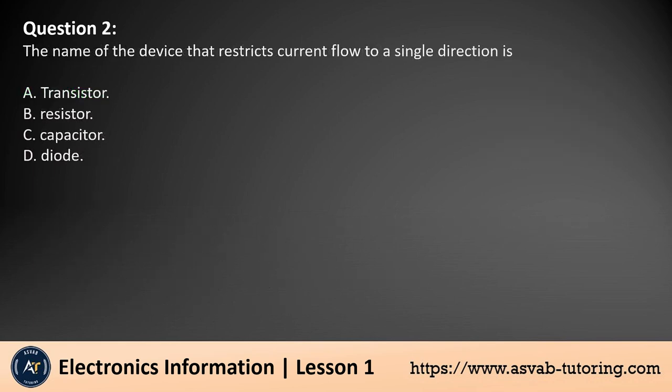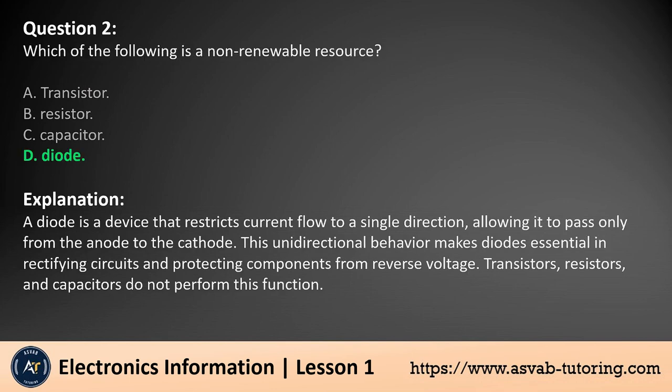Question 2. The name of the device that restricts current flow to a single direction is: a. Transistor, b. Resistor, c. Capacitor, d. Diode. The answer is d. A diode is a device that restricts current flow to a single direction, allowing it to pass only from the anode to the cathode. This unidirectional behavior makes diodes essential in rectifying circuits and protecting components from reverse voltage. Transistors, resistors, and capacitors do not perform this function.